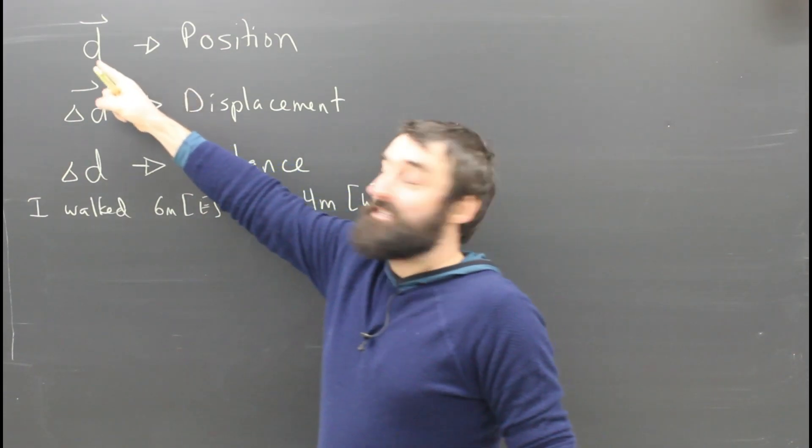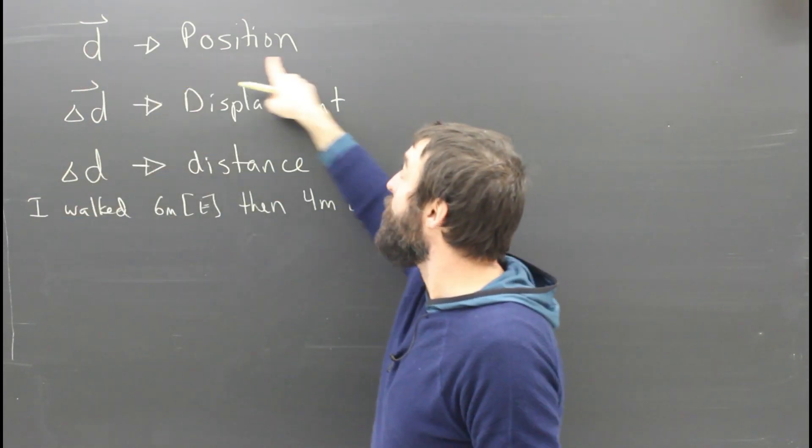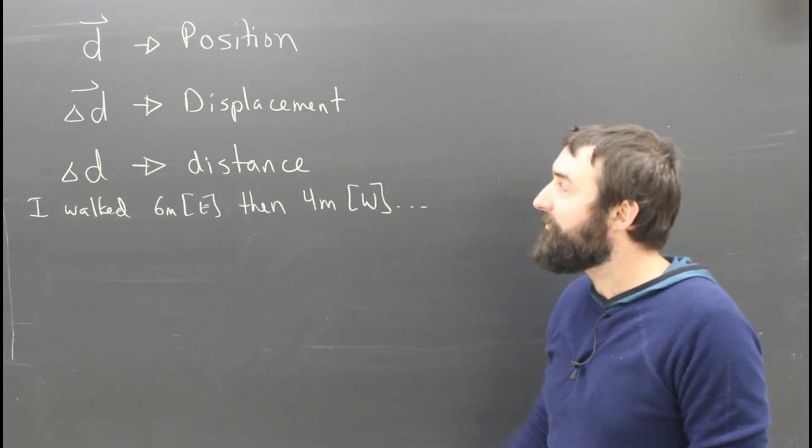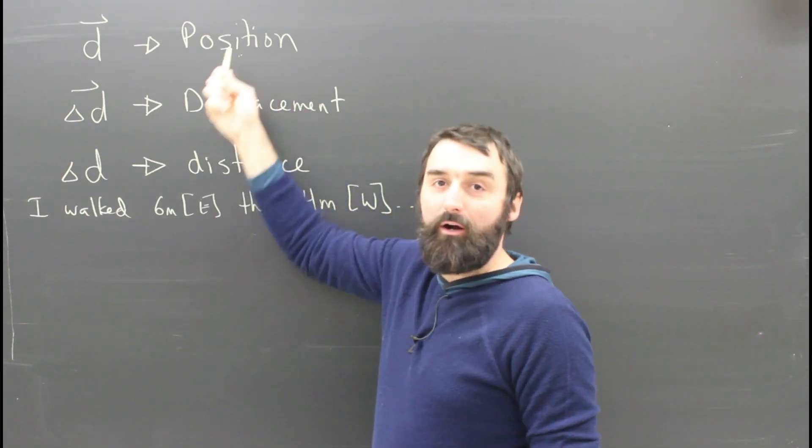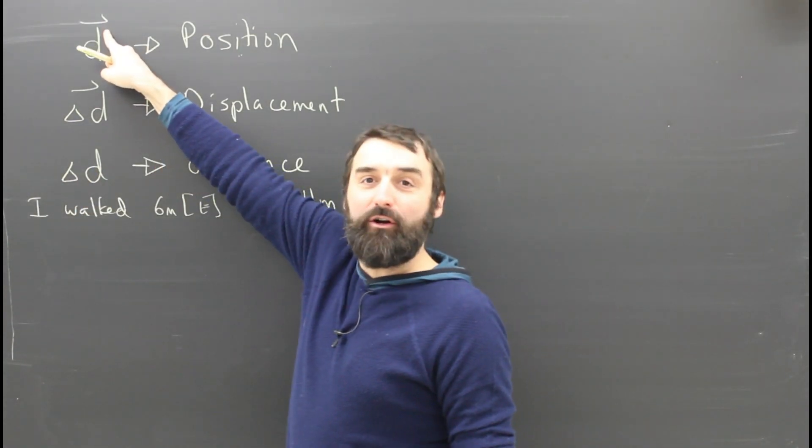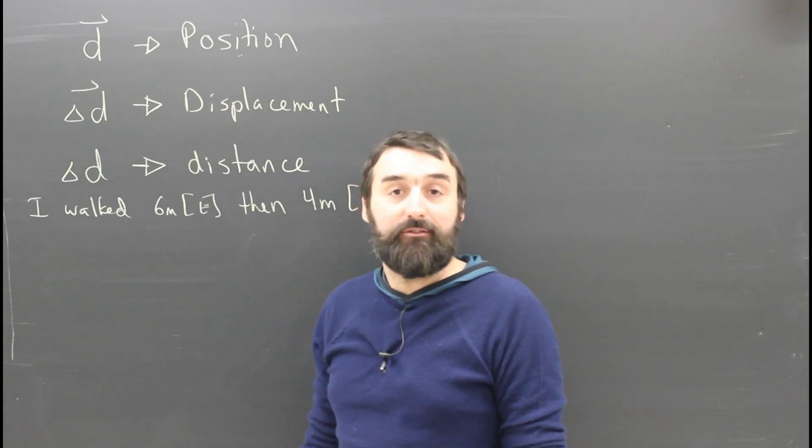d with the little arrow in physics stands for position. A d-t graph is a position-time graph. That just means where you are compared to the spot that we're calling zero. But it has a little arrowhead hat, so it is a vector.